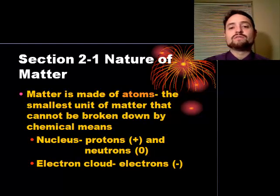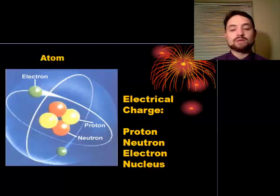So we're looking at the first section is nature of matter. Matter is made up of atoms. Atoms are the smallest unit of matter that cannot be broken down by chemical means. You've got a nucleus with protons and neutrons in it, and then you've got an electron cloud, which are electrons that surround that nucleus.